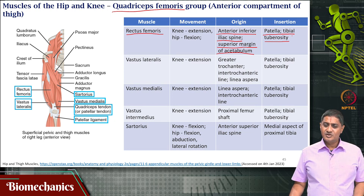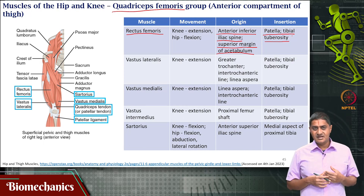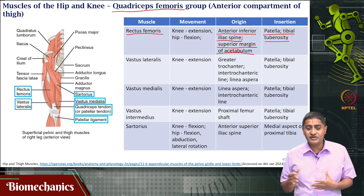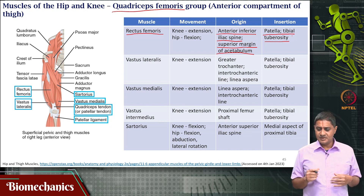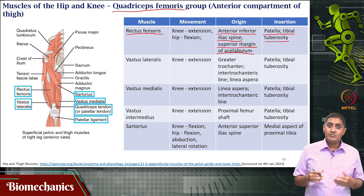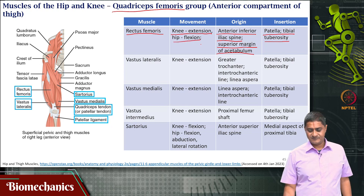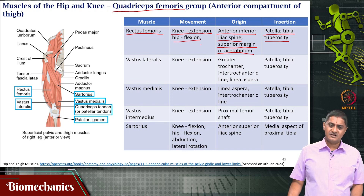Note that rectus femoris has two distinct functions: one is flexion at the hip joint, and the other is extension at the knee joint. Because there are two distinct functions, when it is performing one of these functions, its capacity to perform the other is compromised. This muscle can perform knee extension as well as hip flexion. When it is flexing the hip, its ability to extend the knee is compromised, and vice versa.